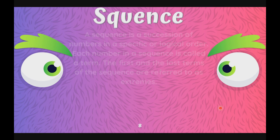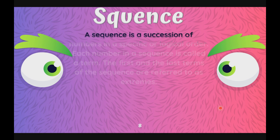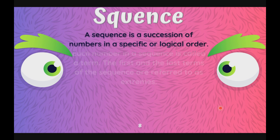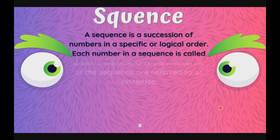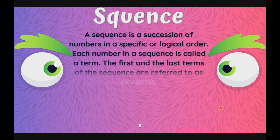Now, let us define what a sequence is. A sequence is a succession of numbers in a specific or logical order. Each number in a sequence is called a term. The first and the last term of the sequence are referred to as extremes.